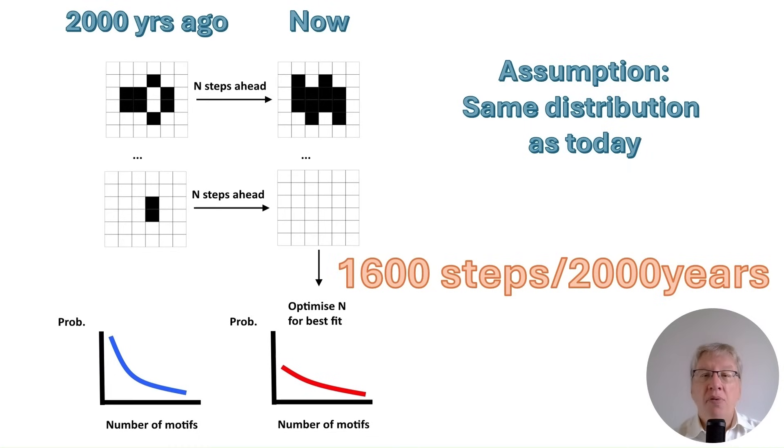Let's walk through exactly how we derive that conversion factor. The overall goal is to artificially age the motifs with our model, represented by the original distribution shown in the blue curve at the bottom left. The core assumption, again stated at the top right of the slide, is that the distribution of myths 2000 years ago had the same initial shape as the distribution today.